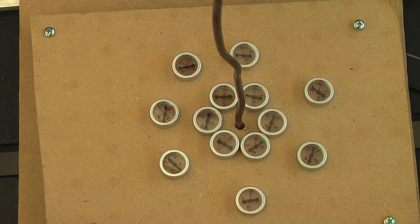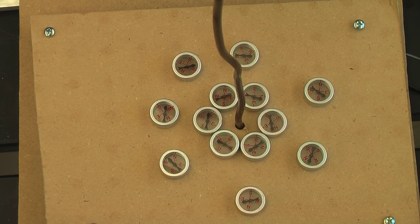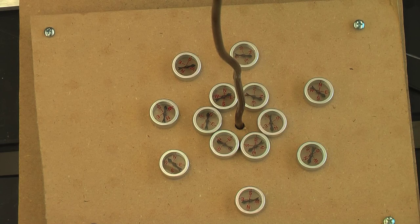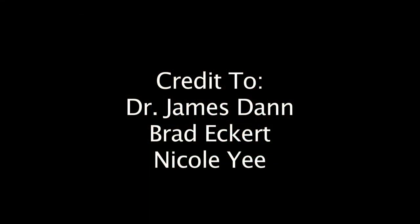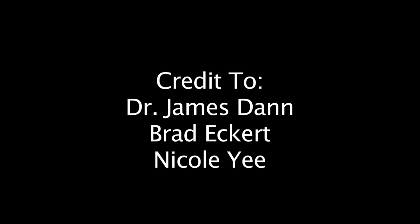You can see the compasses show the magnetic field lines, and the magnetic field lines are in circles around the wire. So you can see the magnetic field lines.